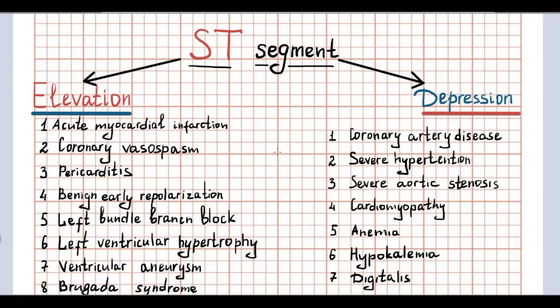The main causes of ST segment elevation are acute myocardial infarction, coronary vasospasm, pericarditis, benign early repolarization, left bundle branch block, left ventricular hypertrophy, ventricular aneurysm, and Brugada syndrome.